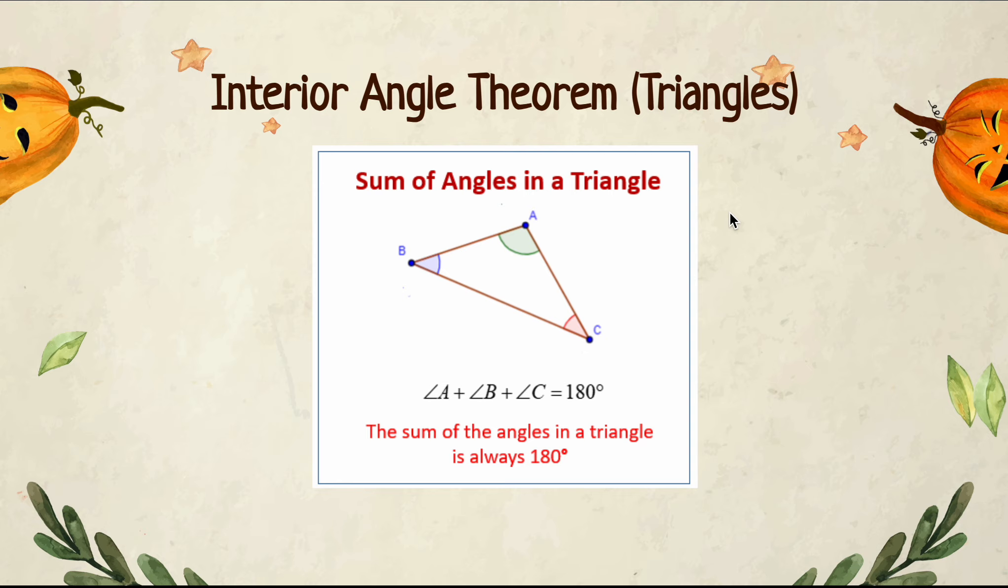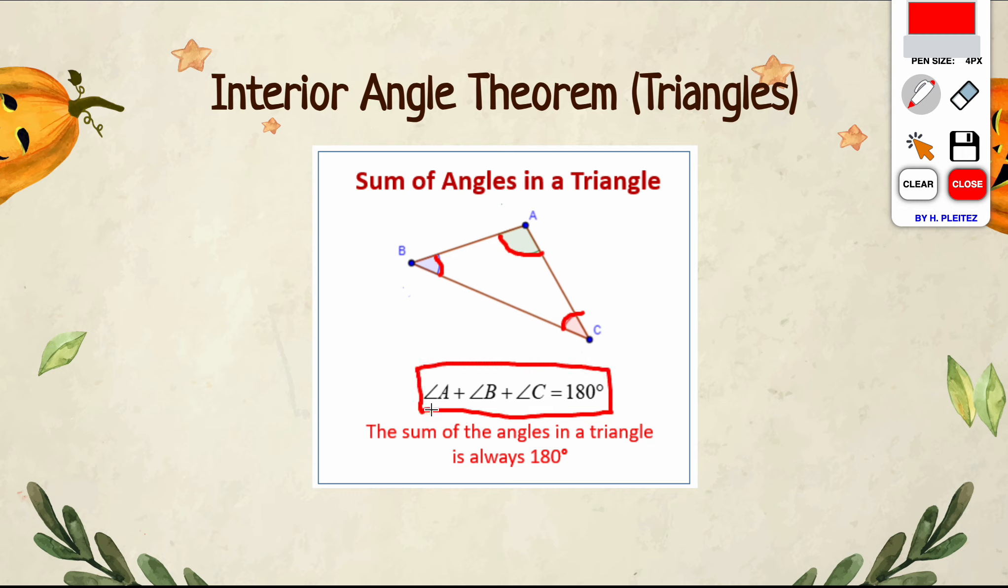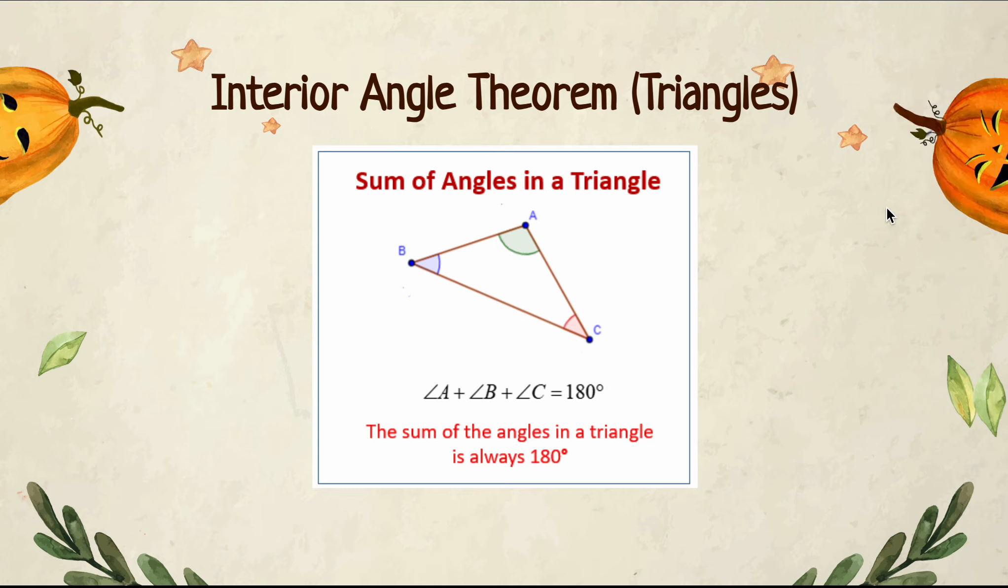The interior angle sum for triangles says that if I add all of my three interior angles up, I'm always going to get 180 degrees. In this case, we have angles A, B, and C here, and if we add all of those up, you can see that we will get 180 degrees. You're going to use theorems like this to help you make equations, because you want to get in the habit of making those equations so that when you have more complex pieces, you know what you are doing.